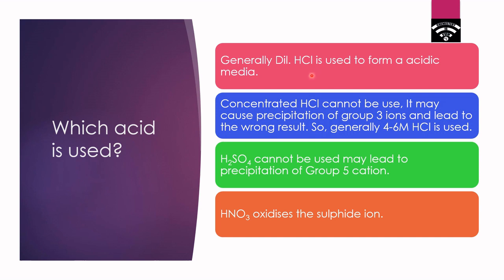Concentrated HCl cannot be used, as it may cause precipitation of Group 3 ions and lead to wrong results. We generally use 4 to 6 molar HCl. H2SO4 cannot be used because, in Group 5, calcium ion is present, and using H2SO4 may cause precipitation of CaSO4, leading to wrong results. HNO3 also cannot be used because it is a strong oxidizer — it will oxidize the sulfide ion and form colloidal sulfur, so there will be no precipitation of the sulfides of the cations.